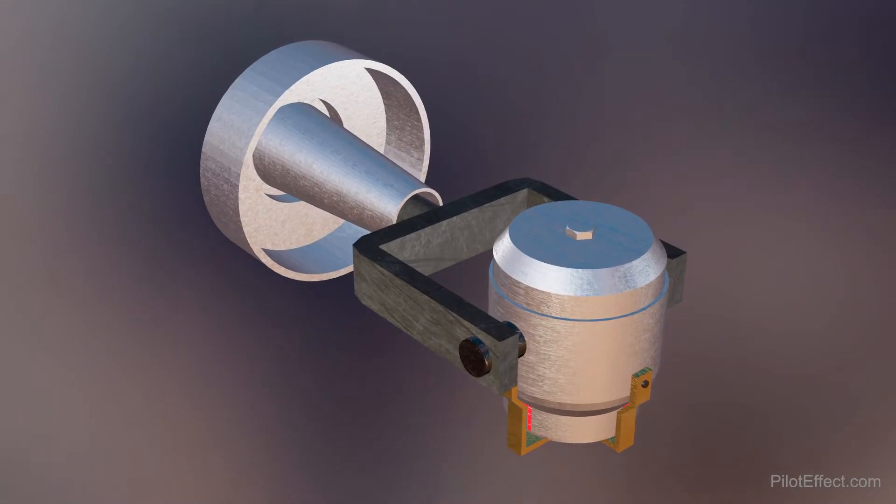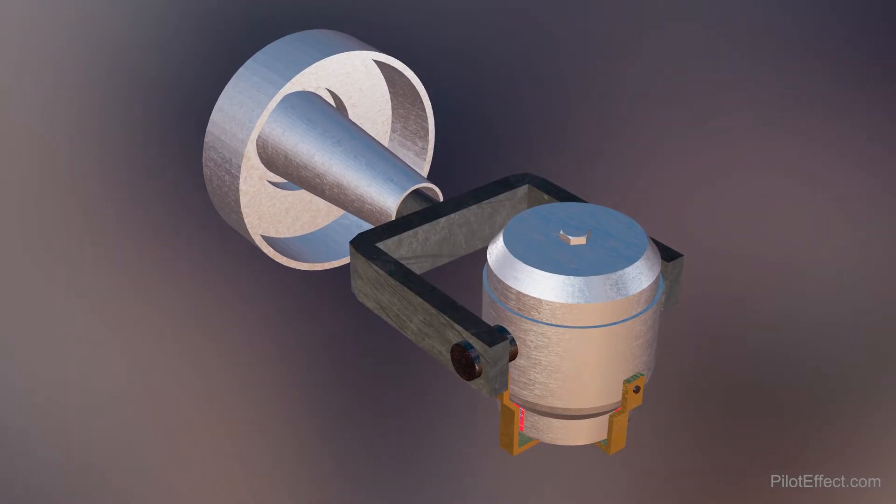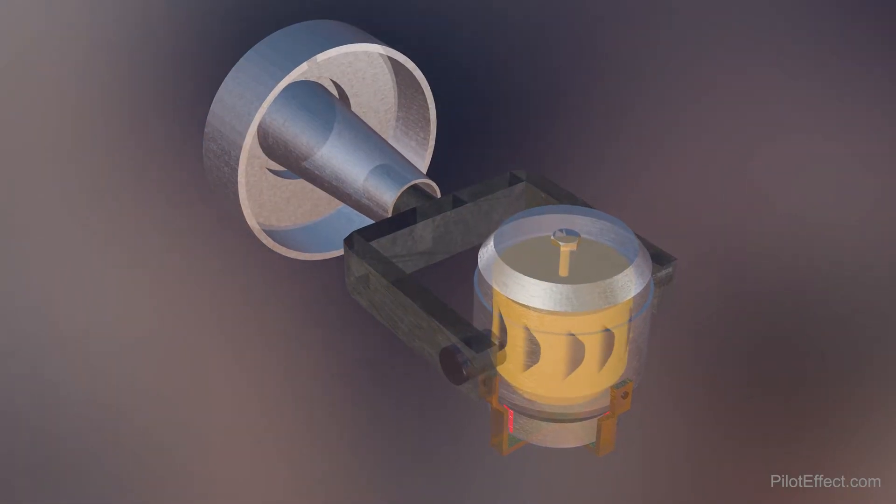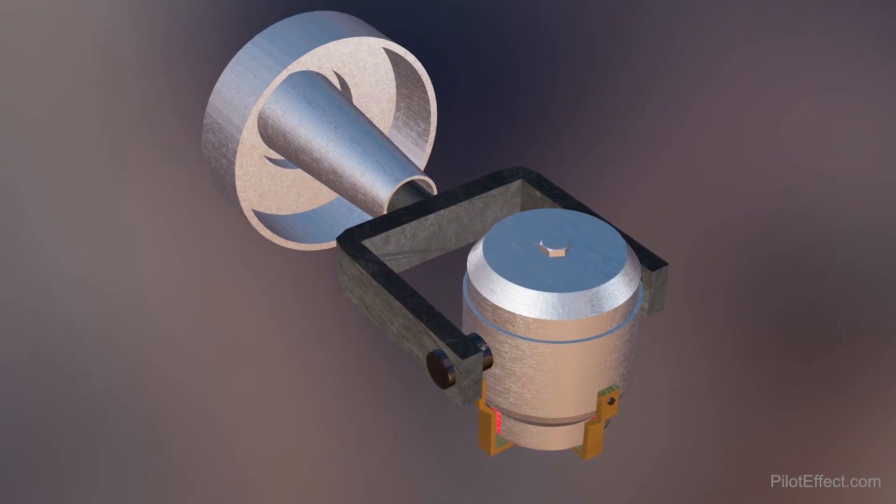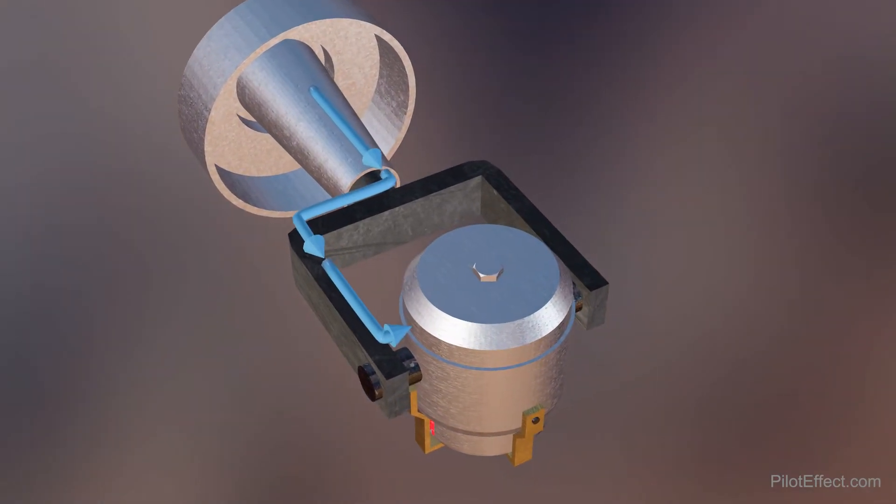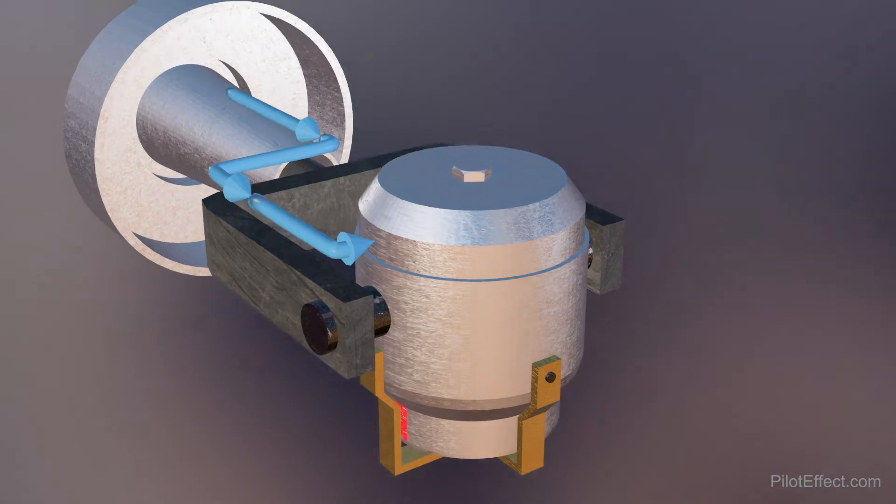Okay, so here we have the inside of an attitude indicator. The rotor of the gyroscope is enclosed in this rotor case. Air enters through the back of the instrument and into the rotor case which spins up the rotor.